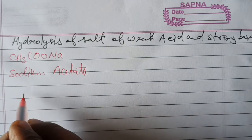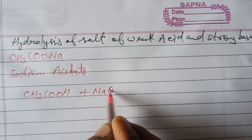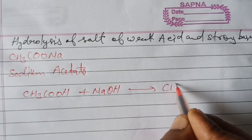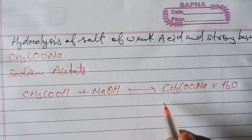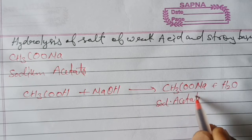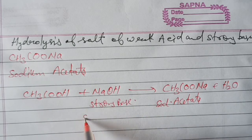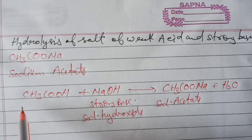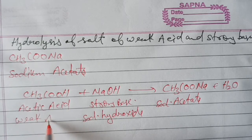How is it possible? Weak acid, that is CH3COOH, and strong base, that is NaOH, react with each other and form salt and water: CH3COONa and H2O. This is sodium acetate, formed from sodium hydroxide (strong base) and acetic acid (weak acid).